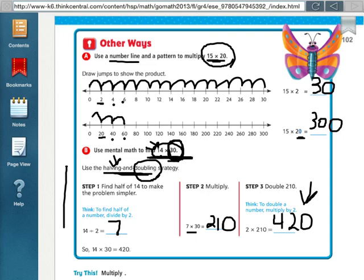So that's the halving and doubling strategy. But remember, like I said, if you can, the easiest way to do it is just the basic fact and add your zeros. All right, hope this helps. That's lesson 3.1 in fourth grade, Florida Go Math. Thanks.